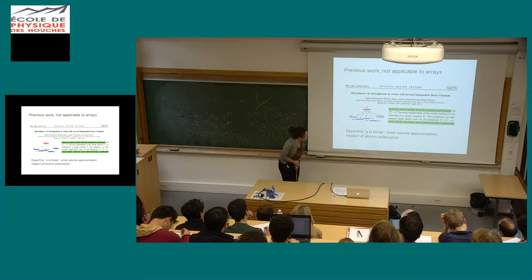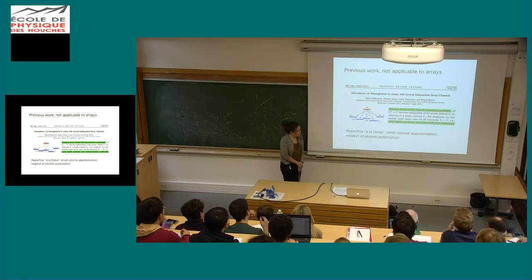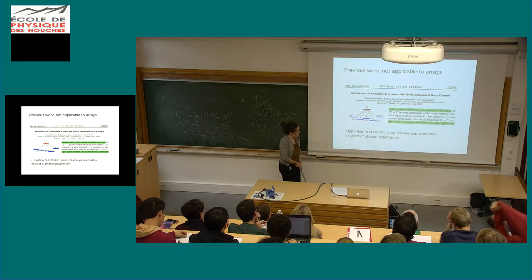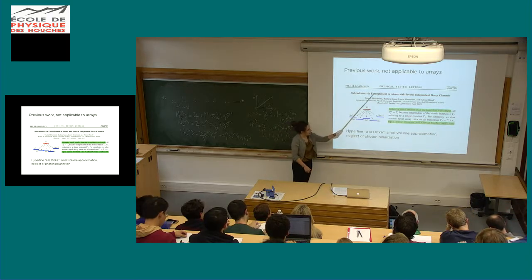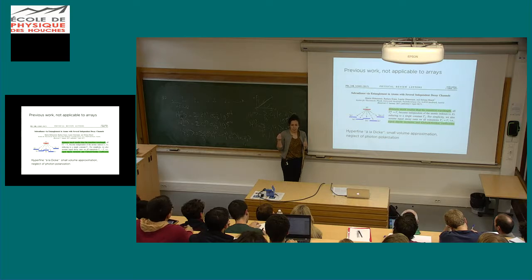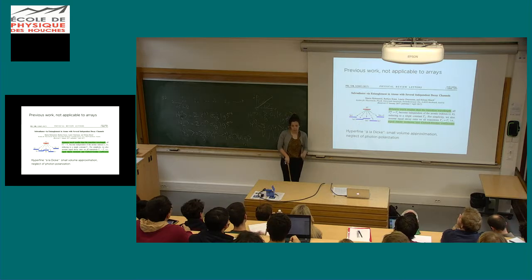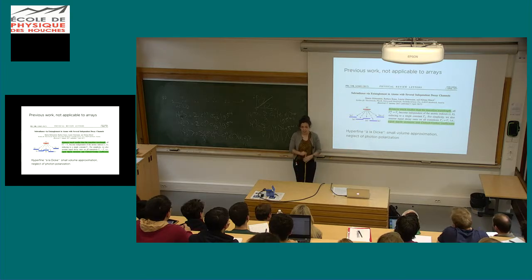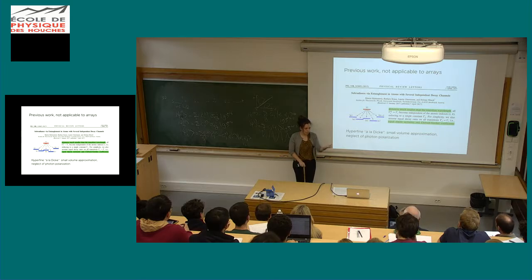I wanted to mention a paper by the group of Helmut Ritsch, precisely about this question: what happens with multiple ground states and one excited state? He found that there is subradiance by entanglement. My only concern is that it treats atoms as all at the same spatial location — very symmetric, same Clebsch-Gordan coefficients, same dipole moments — and it's not clear that this picture survives in an actual array like the one Antoine discussed.